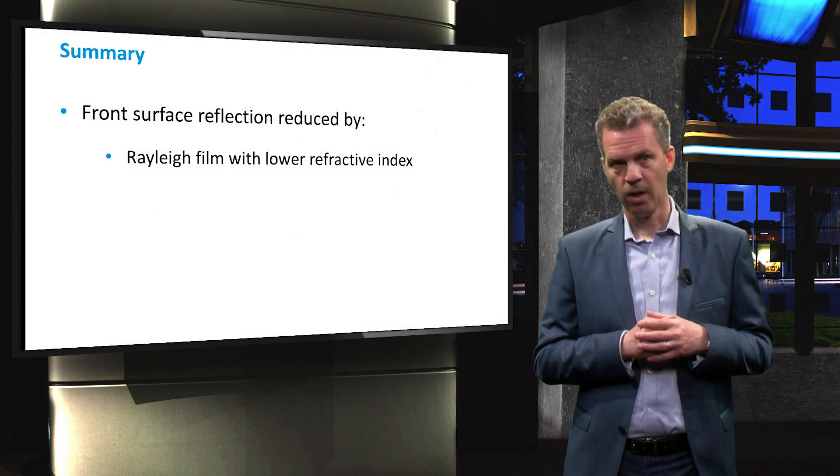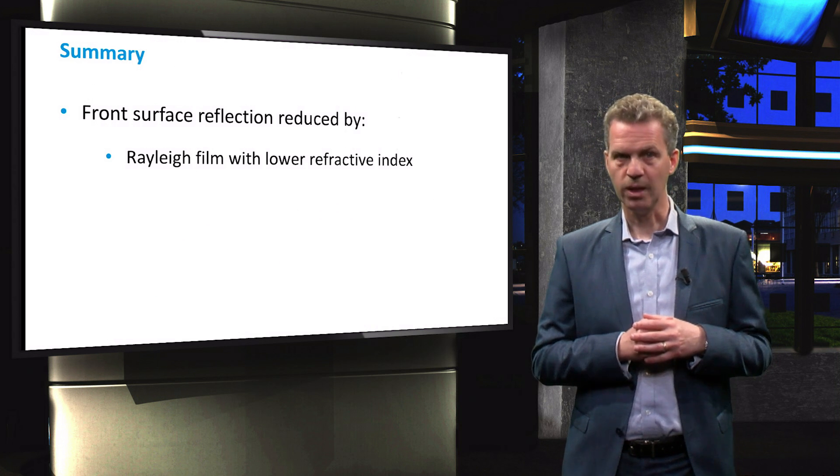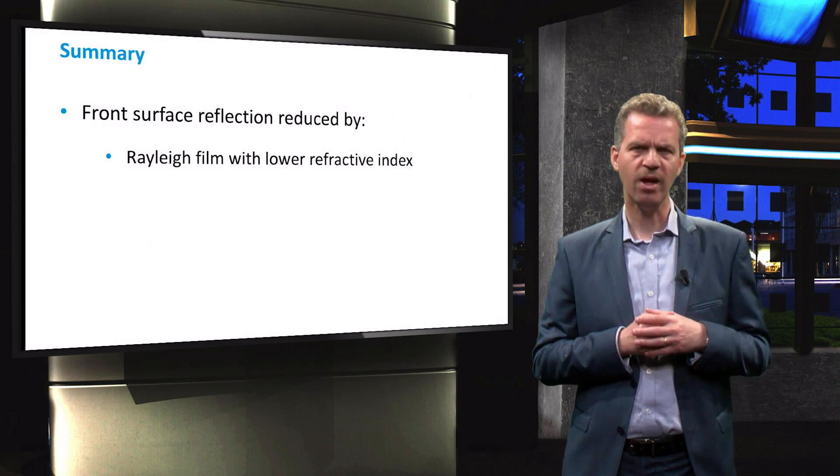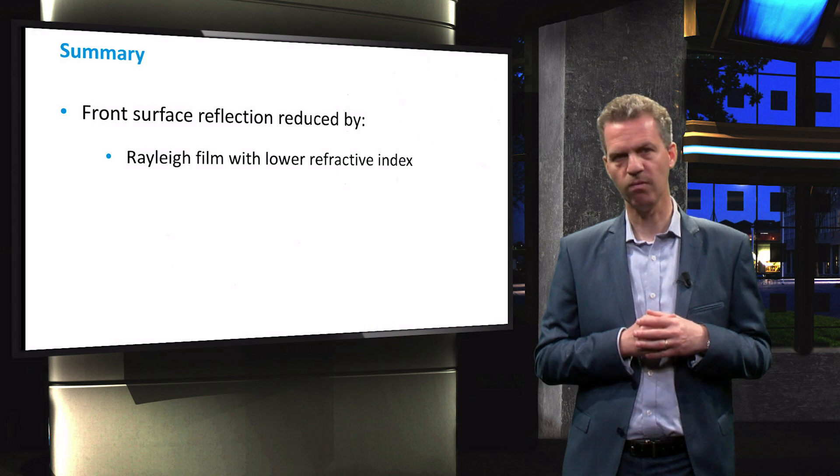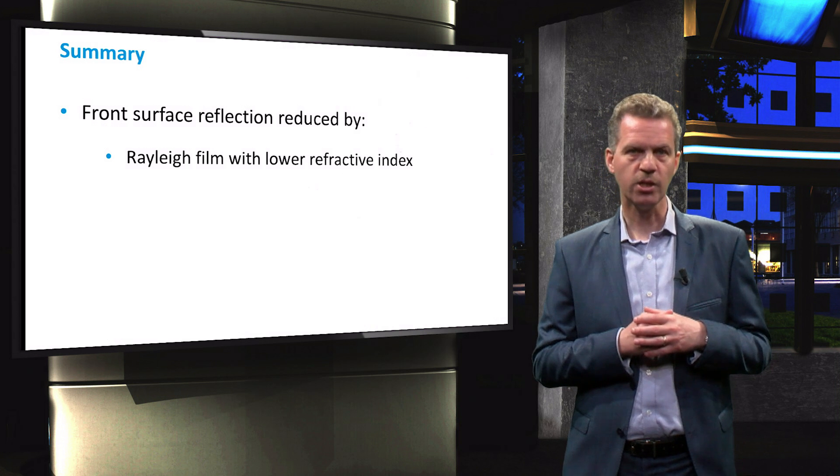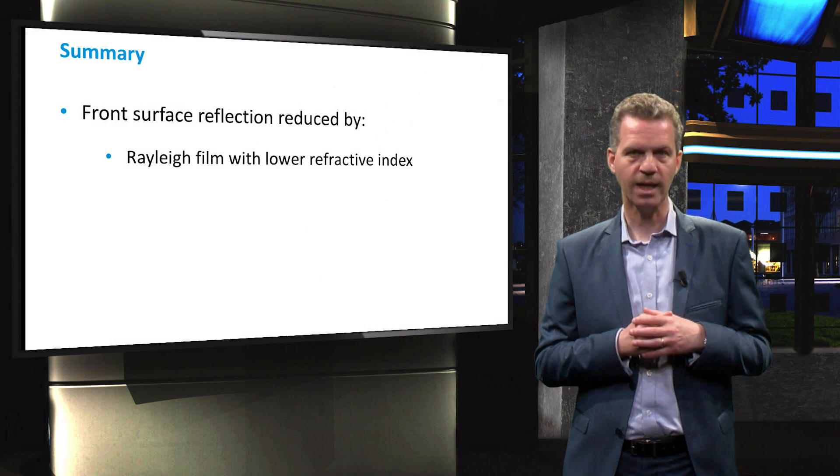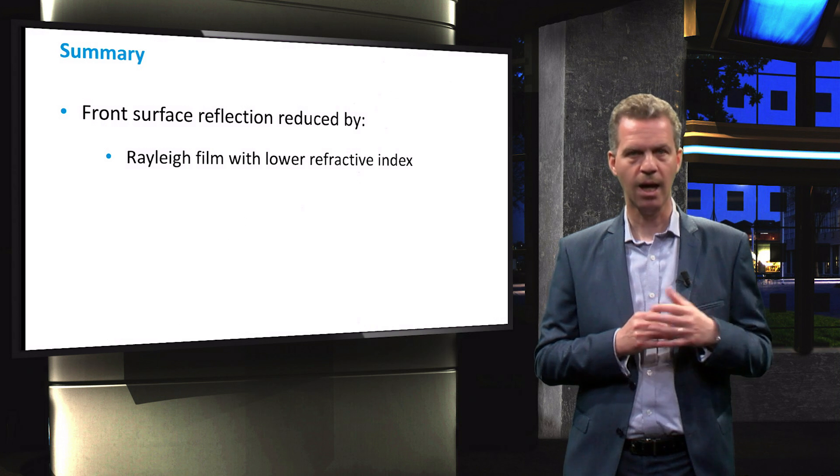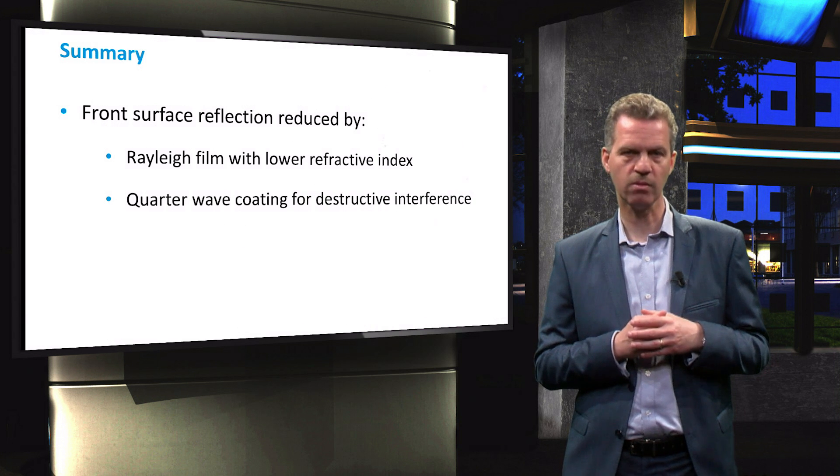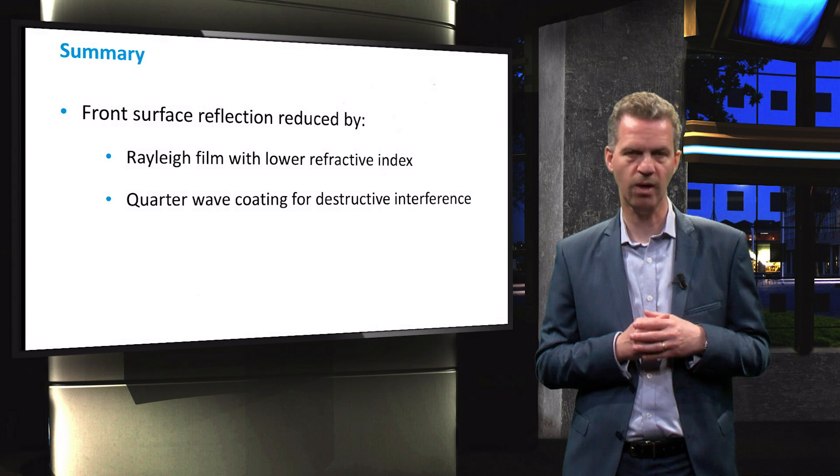To summarize this video, we have discussed the relation between light absorption and short-circuit current density and we have demonstrated that the reflection of light at the front surface can be reduced with an anti-reflective coating. This coating features a specific refractive index in between air and silicon and its thickness can be tuned to minimize reflection losses in a certain wavelength range.